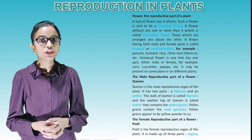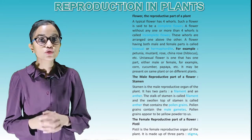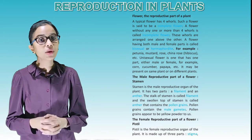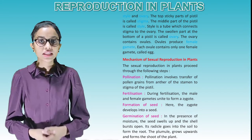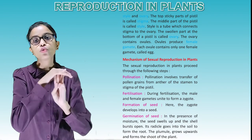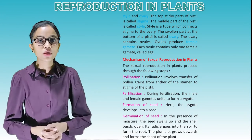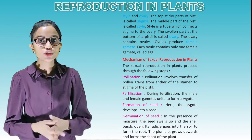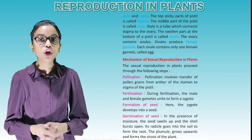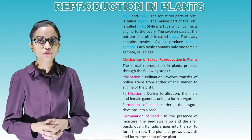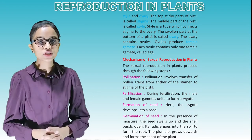The female reproductive part of a flower is the pistil. It is made up of three parts: stigma, style and ovary. The top sticky part of the pistil is called the stigma. The middle part is called the style — a tube which connects the stigma to the ovary. The swollen part at the bottom is called the ovary, which contains ovules. Ovules produce female gametes. Each ovule contains only one female gamete called an egg.